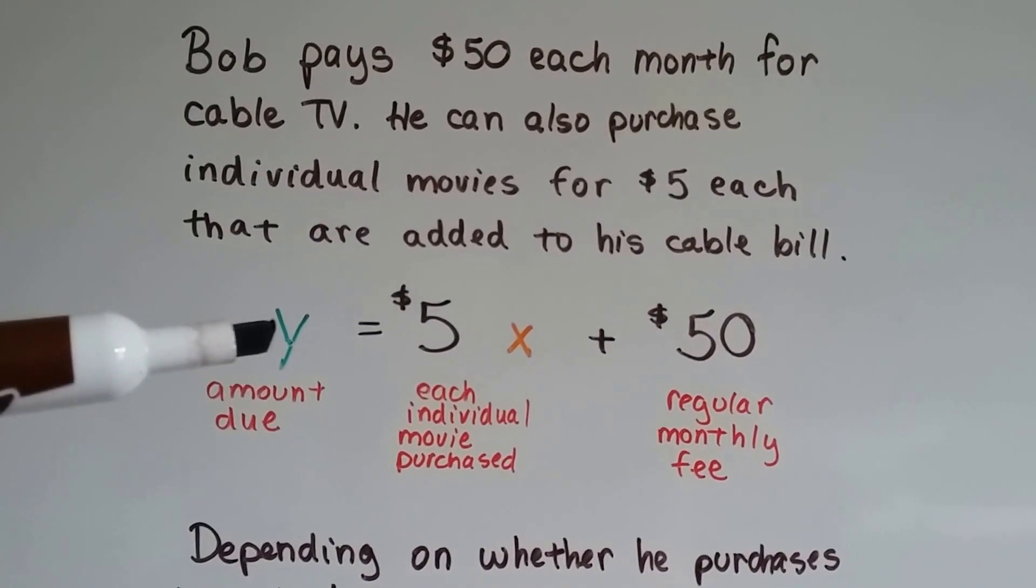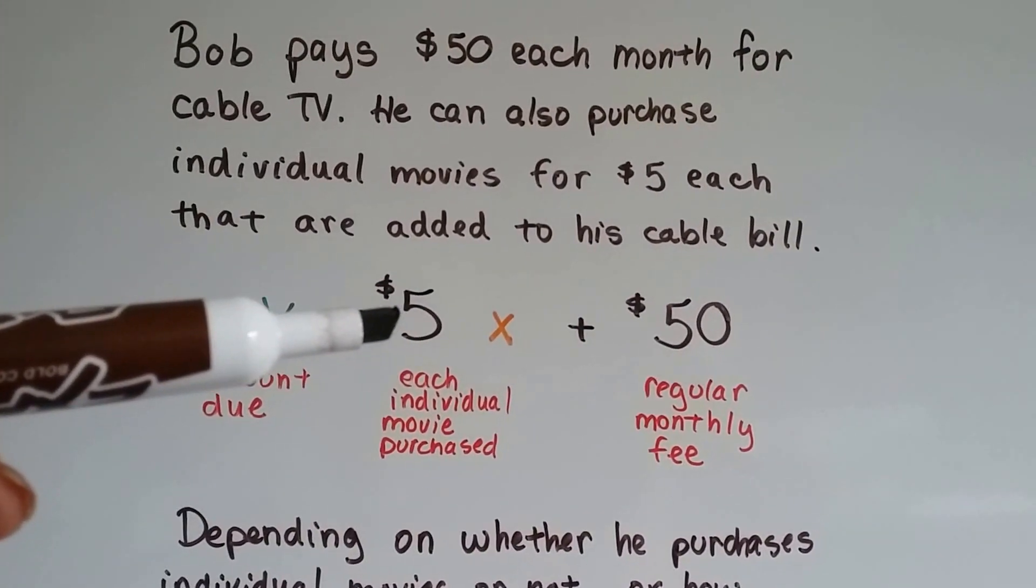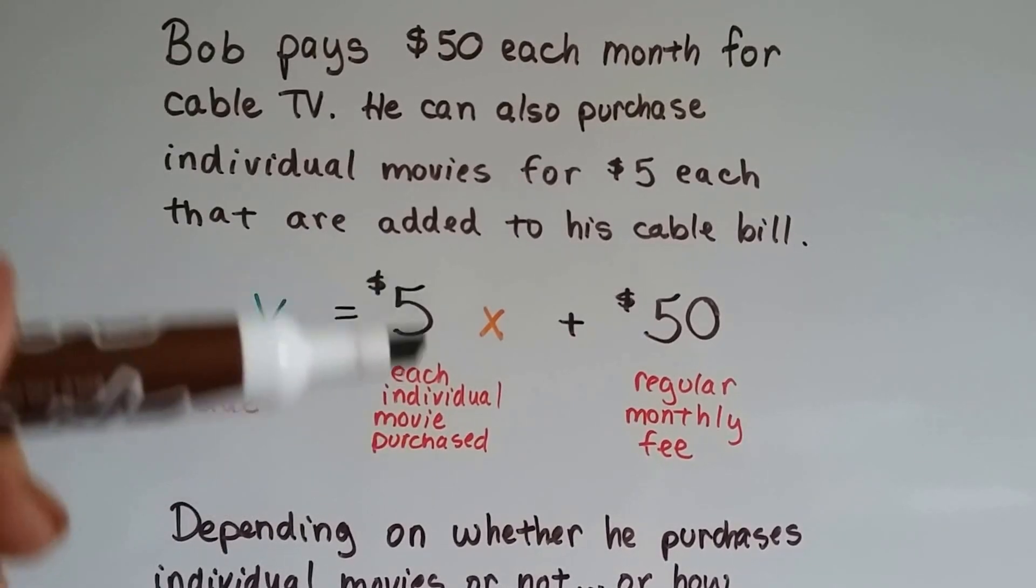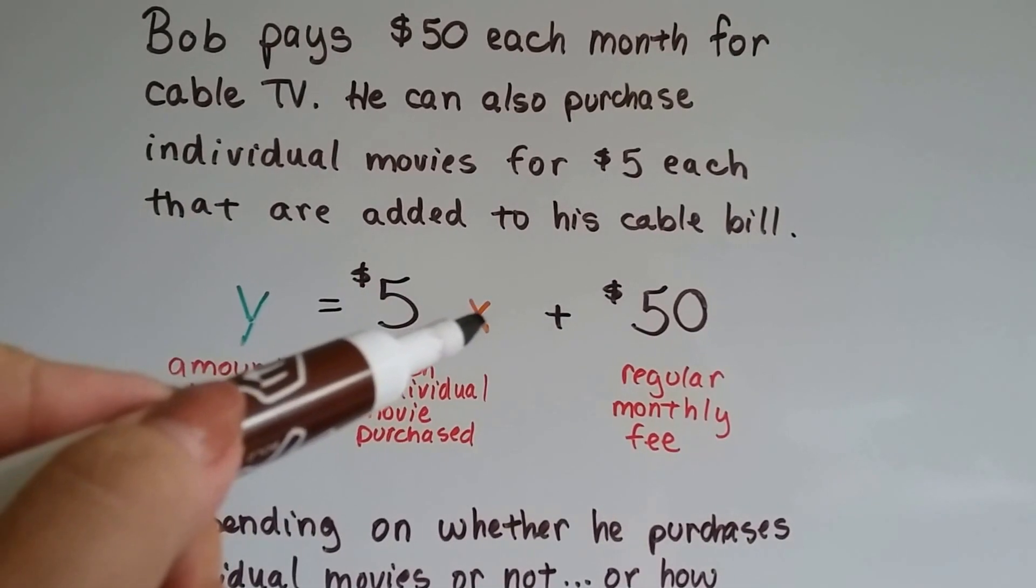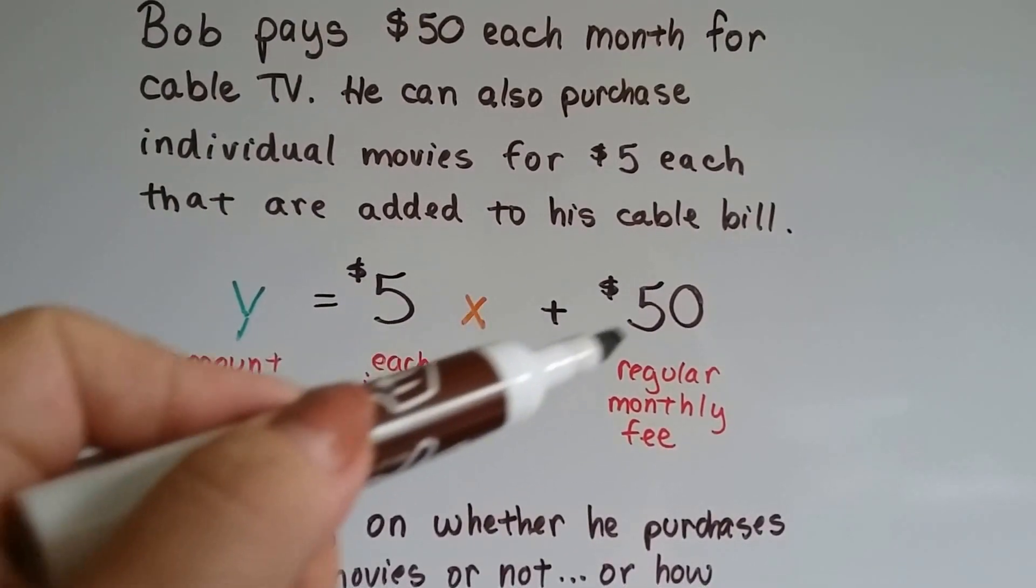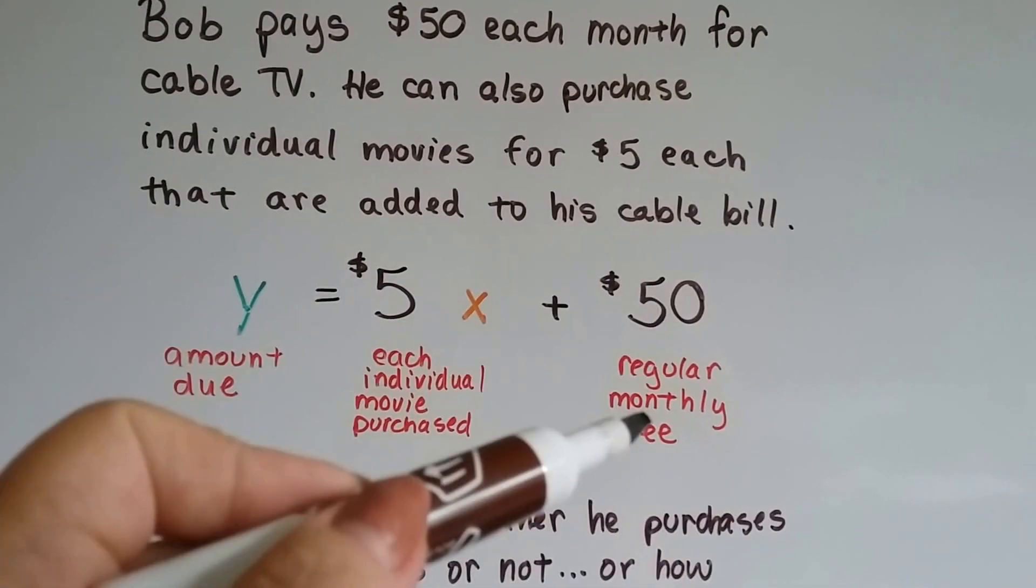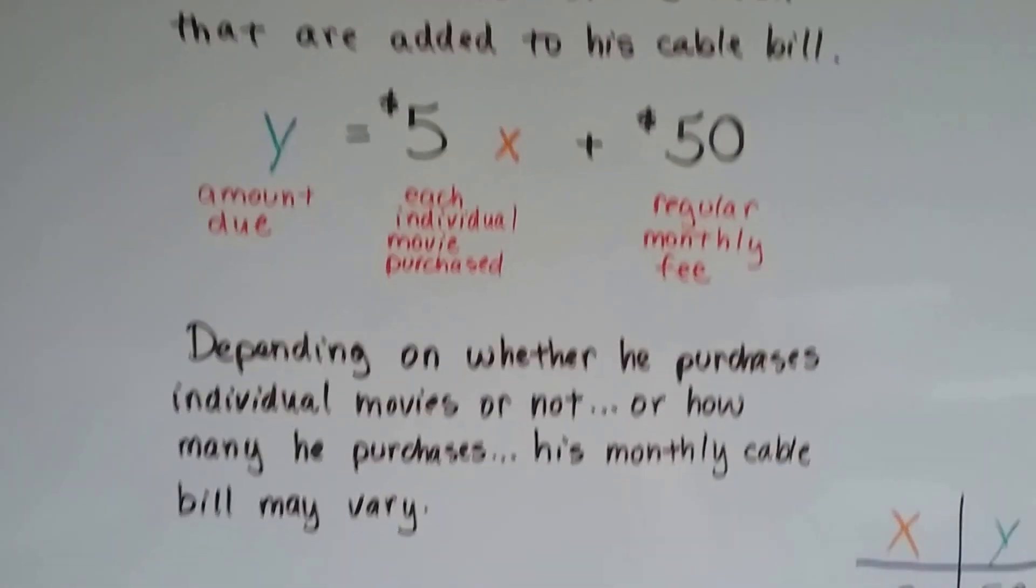Y would equal the amount that was due for the cable bill. $5 is how much each individual movie purchase for the new releases are. X is how many movies he purchased. And then the $50 is that regular base monthly fee.